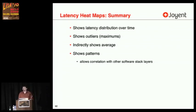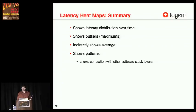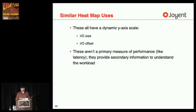For summary of the latency heat maps: it shows latency distribution over time, shows outliers and the maximums, indirectly shows the average, and shows patterns which is really cool. It also allows correlation with other software stack layers — like connecting NFS to the disk IO level — which is really hard to do programmatically, but our eyeballs do really well. Similar heat map uses with a dynamic Y-axis scale: IO size and IO offset — not primary measures of performance like latency, but very useful as well.